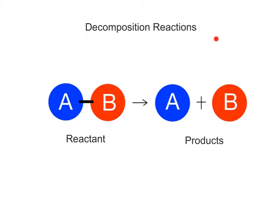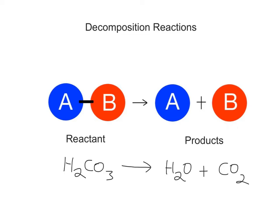In decomposition reactions, a large chemical reactant breaks down into its smaller building blocks — the products. Decomposition reactions are the opposite of synthesis reactions. A general equation for a basic decomposition reaction is: reactant AB yields product A and product B. An example of a decomposition reaction is the breakdown of carbonic acid, H2CO3, into water and carbon dioxide. As you can see, this reaction is the exact opposite of the example used to illustrate the synthesis reaction.